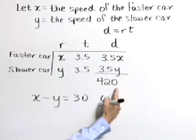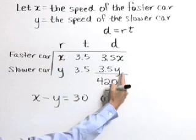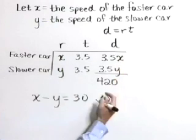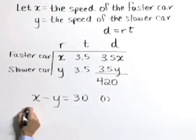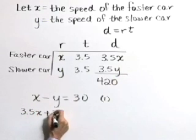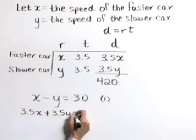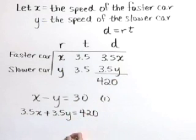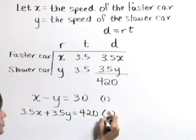Equation 2 comes from our last column, where the sum of these distances is 420. So write 3.5x plus 3.5y is equal to 420, and let's call that equation 2.